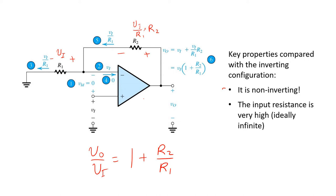We note a key difference compared with the inverting configuration: the gain here is positive — that is, it's not inverting. The second main difference from the inverting configuration was already pointed out: the input resistance is very high and ideally infinite.